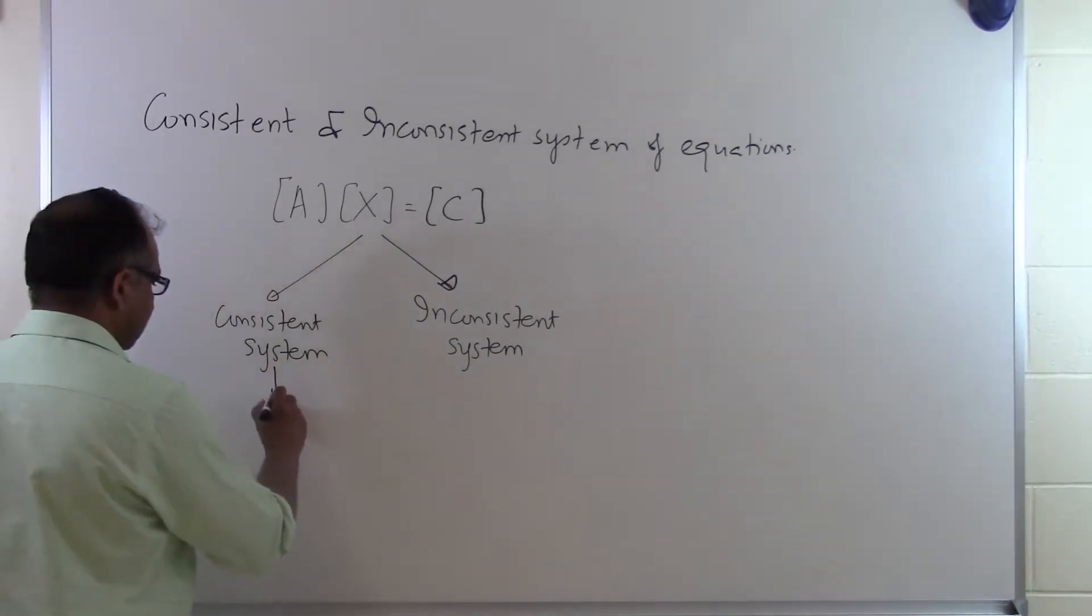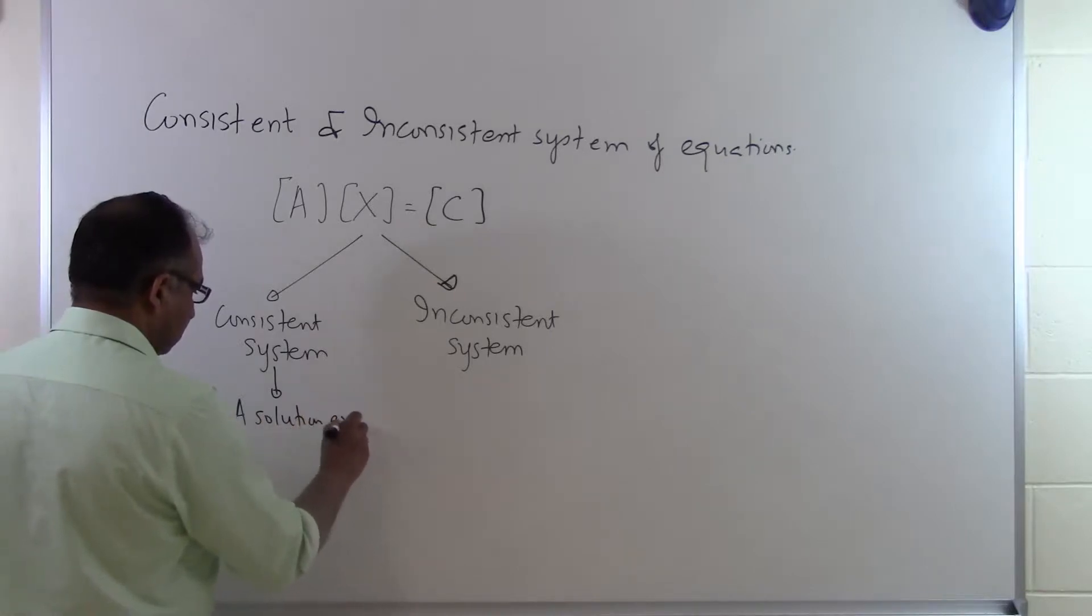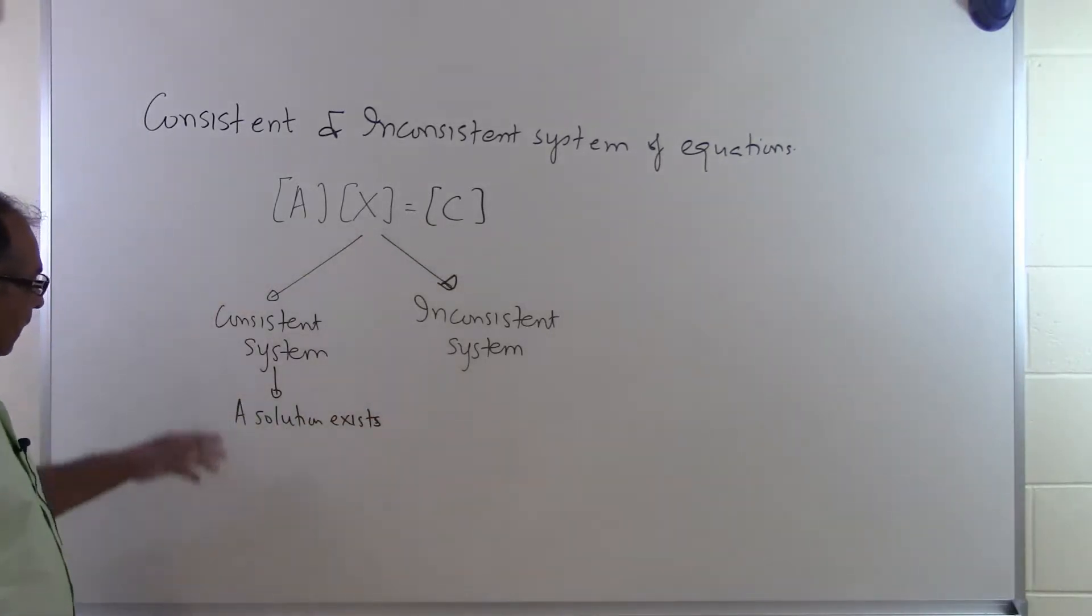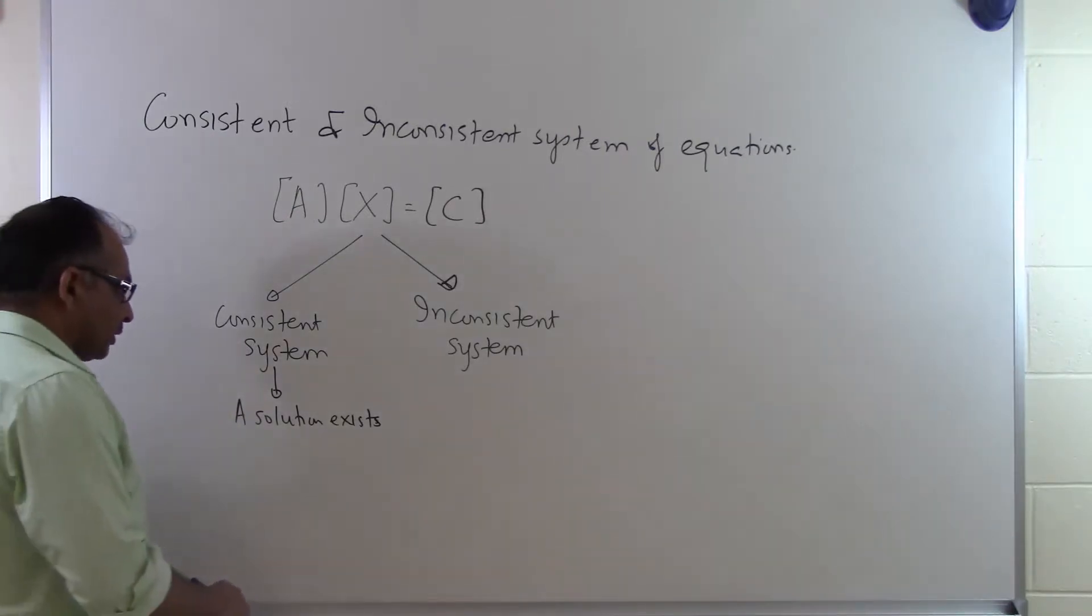Consistent means that a solution exists. What that means is that it has a solution. It doesn't mean that it has only one solution, but that if a system of equations does have a solution, then it's considered to be a consistent system of equations.